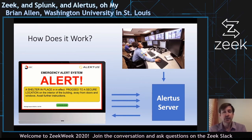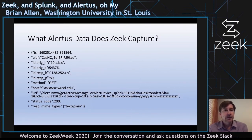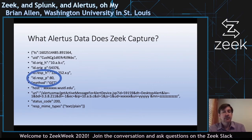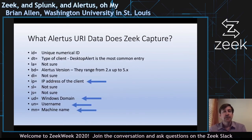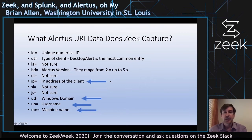You might recognize this traffic — it's an HTTP log in Zeek, and it's on port 80, so this is cleartext traffic and we can see everything going back and forth on campus. The interesting information is in the URI column. Alertus sends the IP address of the client in each connection — which usually matches the originating host in Zeek but matters when there's NAT. It also includes the Windows domain and the username, which is extremely useful, and the machine name can also be very useful.